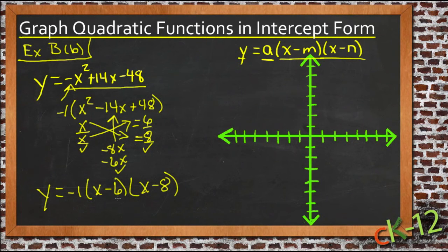So now we know our two x-intercepts, they're the two values that make these individual factors equal to 0. x minus 6 has got to be 0, so that would happen when x is positive 6, and x minus 8 would be 0 when x is positive 8.